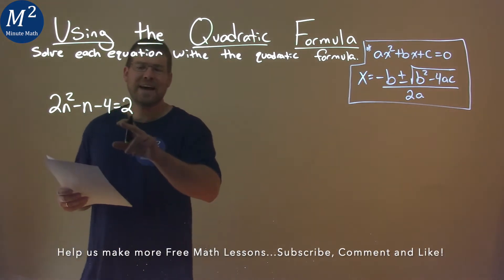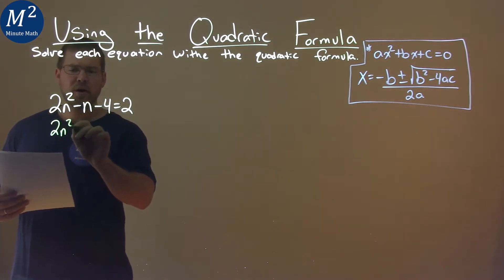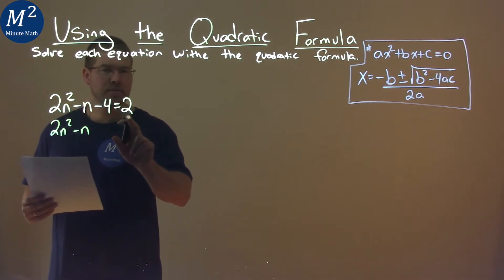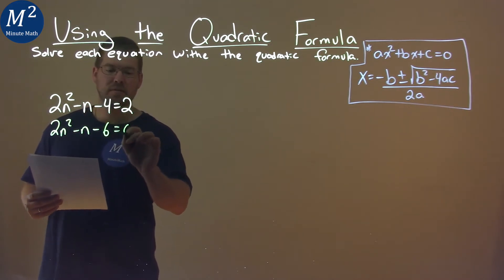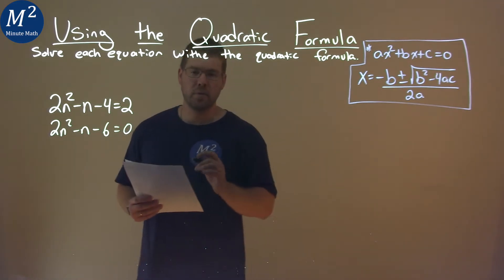First thing I notice is I need to have this equation equal to 0. So 2n² - n, I'm going to subtract 2 from both sides, and -4 - 2 = -6. So now my equation equals 0, and we can use the quadratic formula.